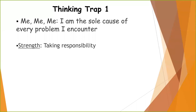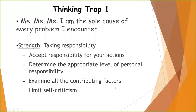Thinking traps — these are some of the things we may be hearing from clients in the facilitating understanding period. Thinking trap one: 'Me, me, me' — I'm the sole cause of every problem I encounter. For example, 'I lost my house because I did this and this,' when the person lives in a house with a spouse and children. Encourage them to determine the appropriate level of personal responsibility, examine all the contributing factors, and limit self-criticism. The problem's happened — you can either lash yourself, or we can figure out what to do to improve the next moment.